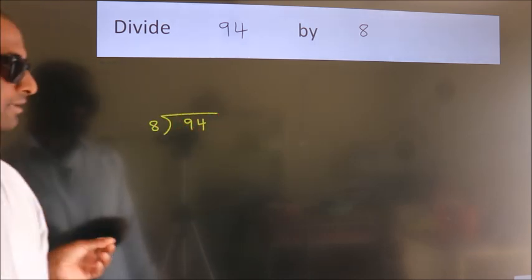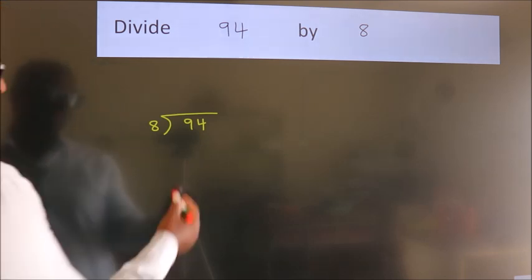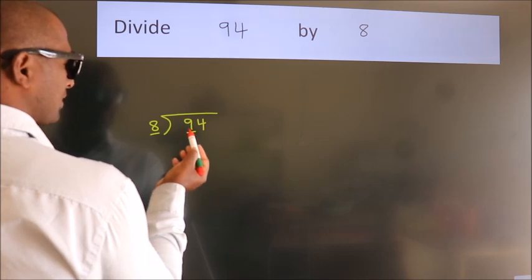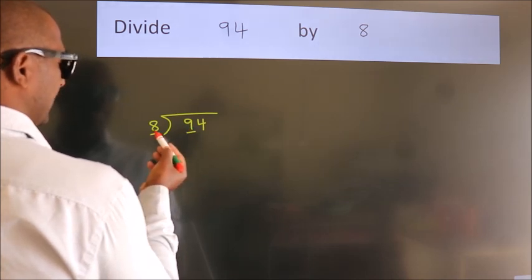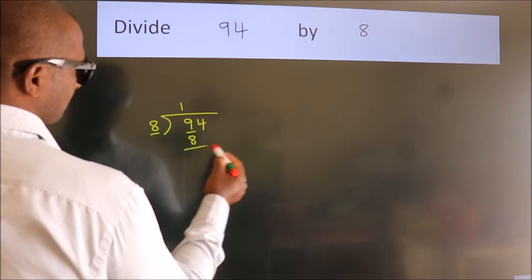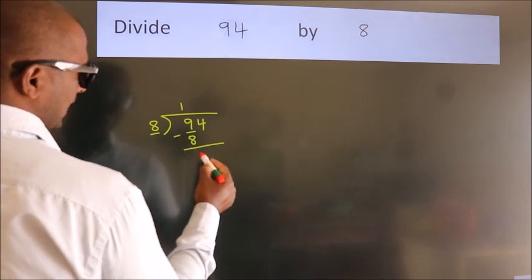This is your step 1. Next, here we have 9, here 8. A number close to 9 in 8 table is 8 once, 8. Now we should subtract, we get 1.